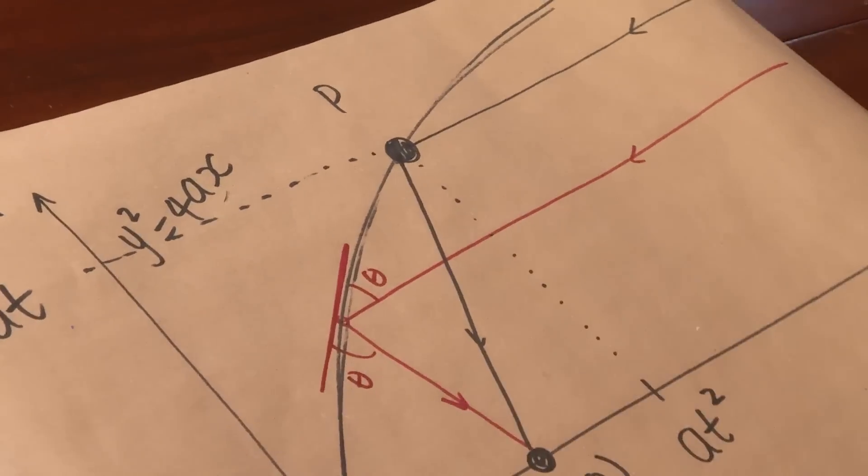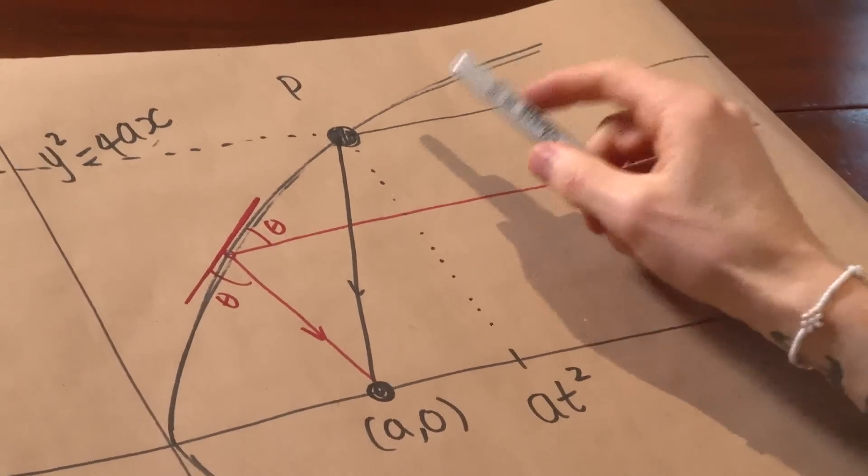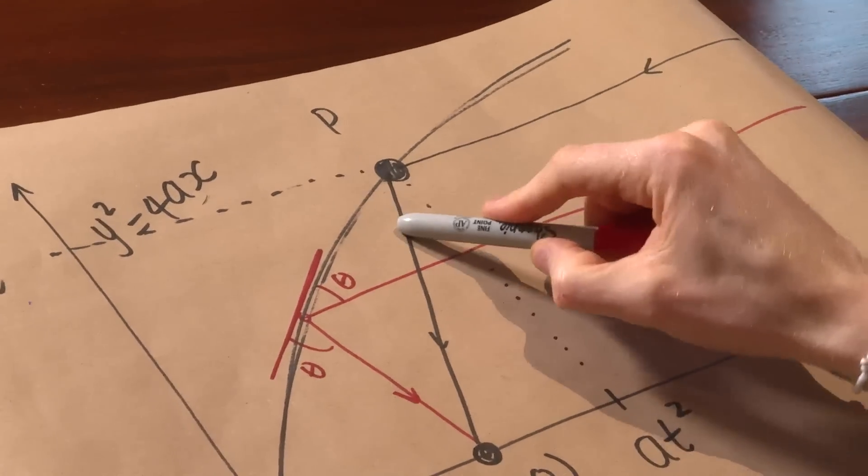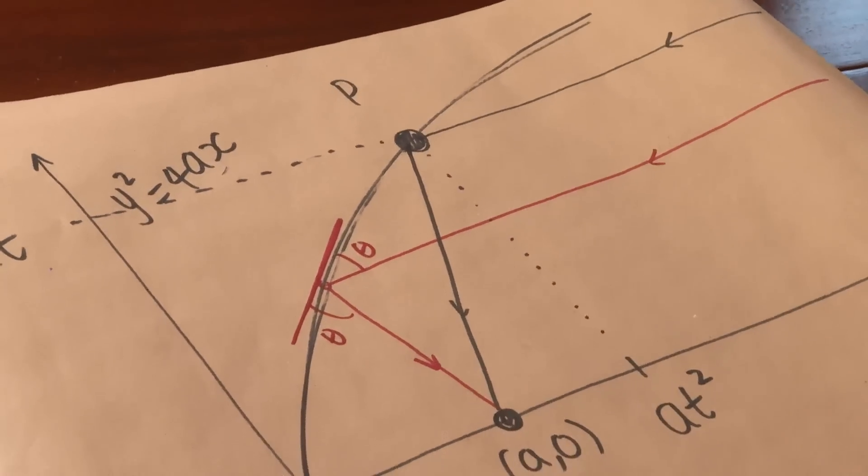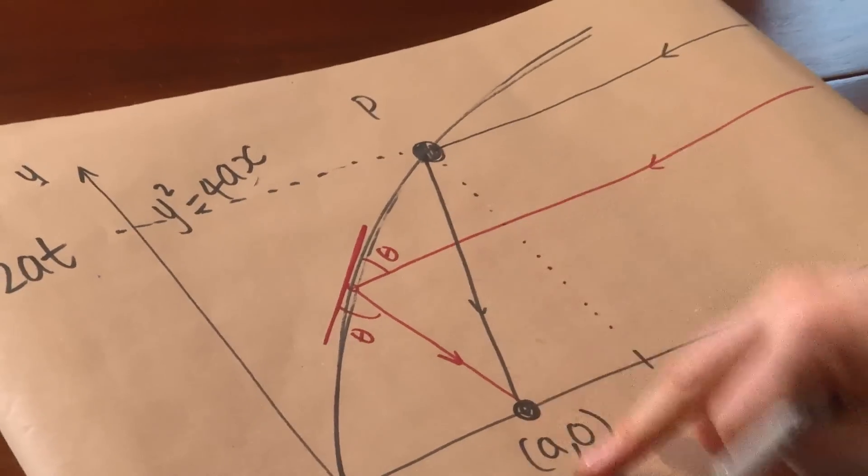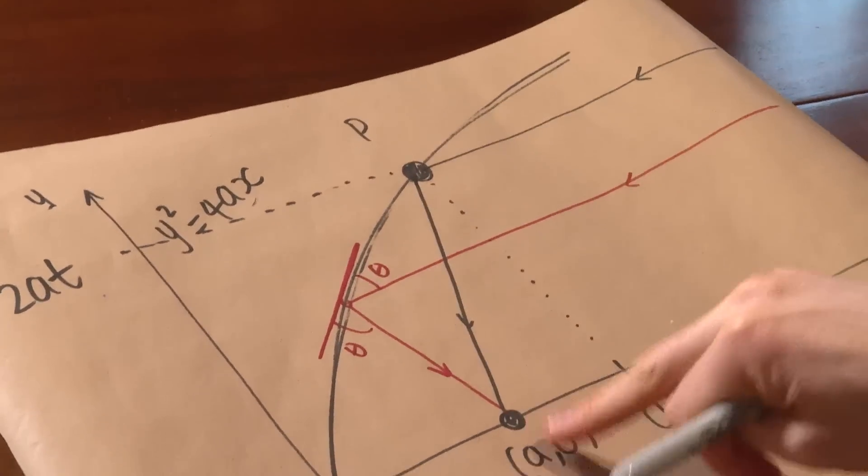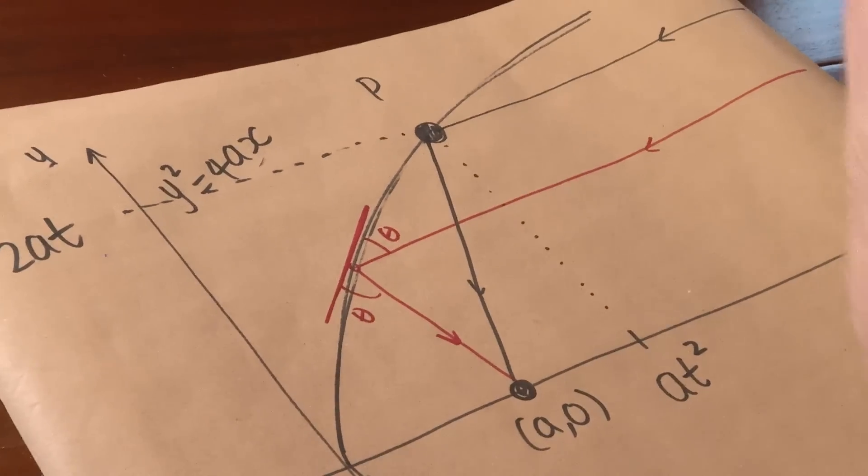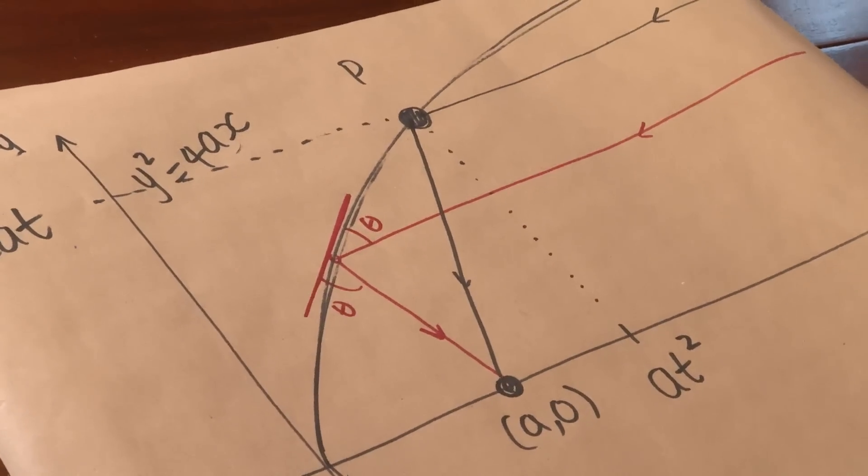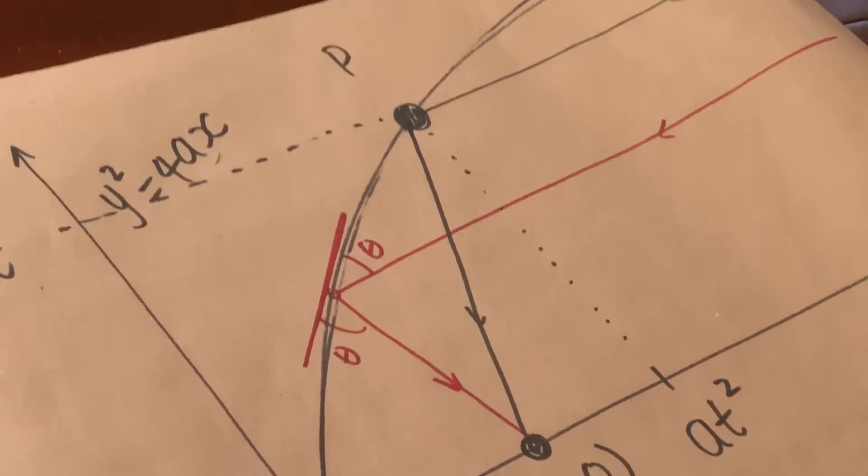So what we need to do or we need to show mathematically is that this angle here and this angle are the same. Because if we can show that, if we can show the angle coming in, the angle coming out based on going from a general point always to here, that would prove from a mathematical standpoint that everything is going to be focused at this point.